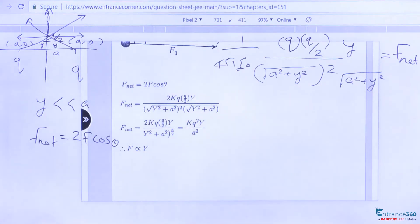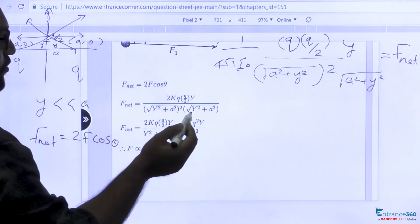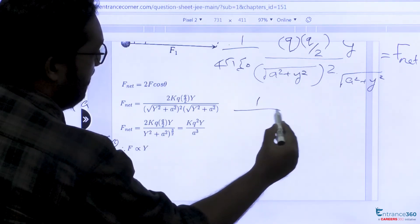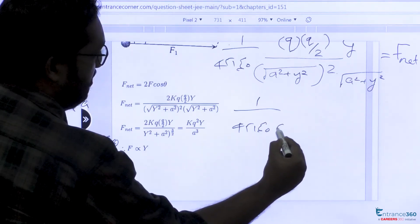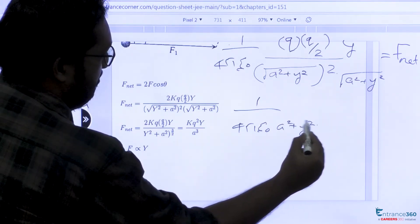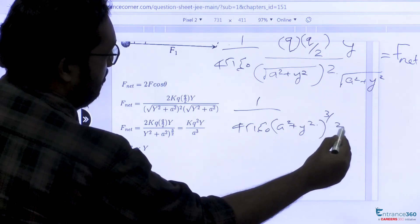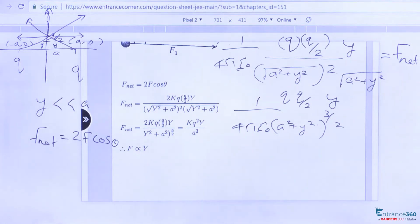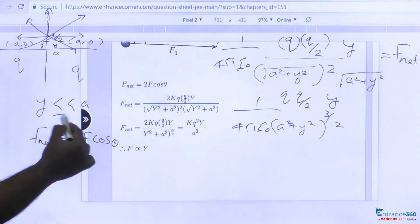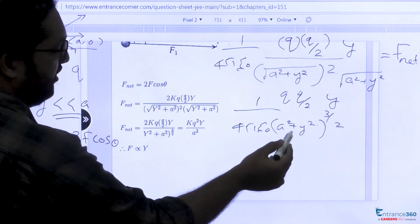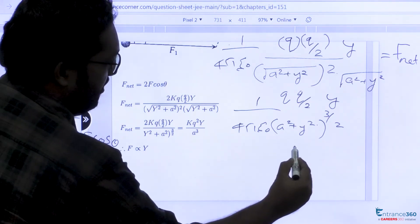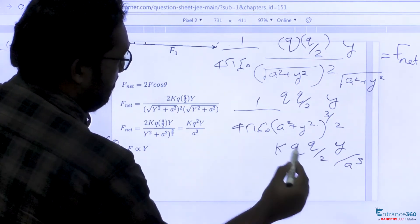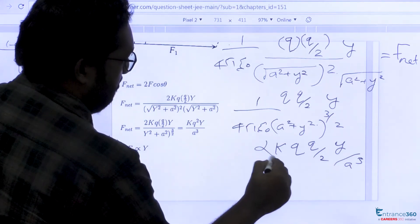For the required force, looking at the denominator part, this becomes 1/(4πε₀) times (a² + y²)^(3/2) times q times q/2 times y. Now the question mentions that y is very very less than a, so the denominator becomes a³. It will be (q × q/2 × y)/a³ times the constant, which is the force.